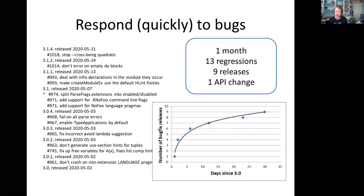What happened? Lots of bugs, which we expected. In the month following the release, we found 13 separate regressions and made 9 releases to address them. One regression necessitated an API change, bumping us straight to 3.1. The number of days since 3.0 plotted against bug-fix releases fits a perfect logarithmic curve — within a day we made a release, three days later three more releases, then a three-day gap, then six days, then slightly longer. We were able to fix all the bugs quickly; after a month, most were gone.